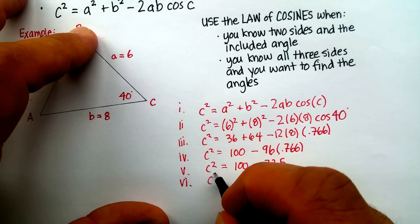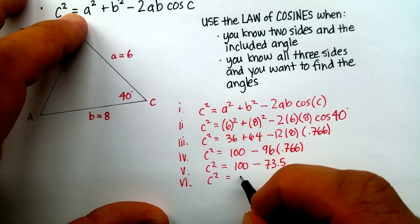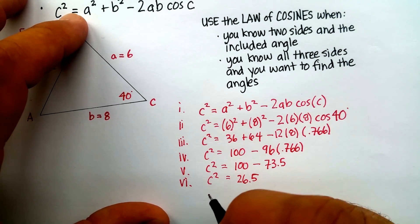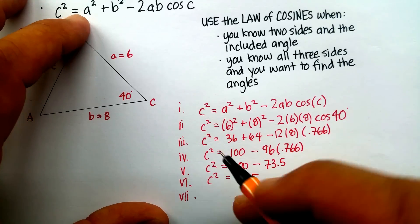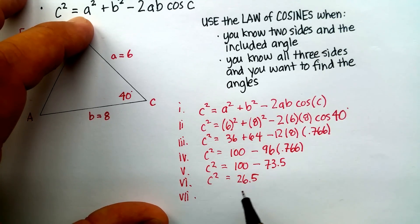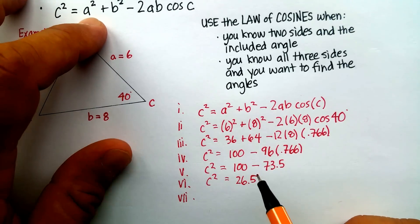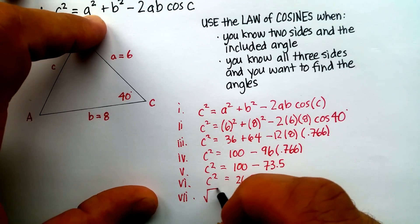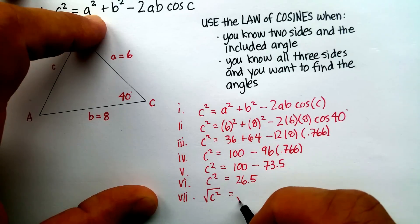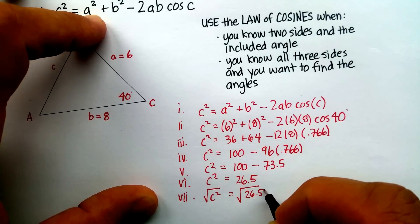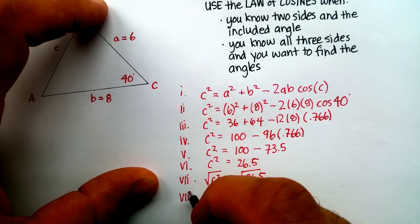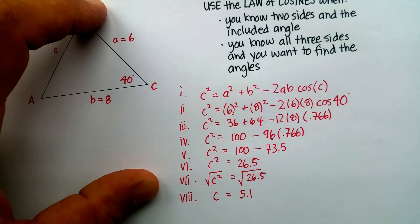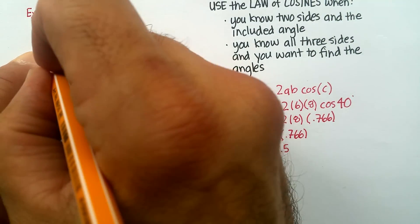Next step: c squared equals 100 minus 73.5, which gives c squared equals 26.5. I like using roman numerals to keep track of steps — it's like writing a math paragraph, and each sentence is really handy. Taking the square root of both sides, my final answer is c is approximately 5.1, and I can go back and fill that in.